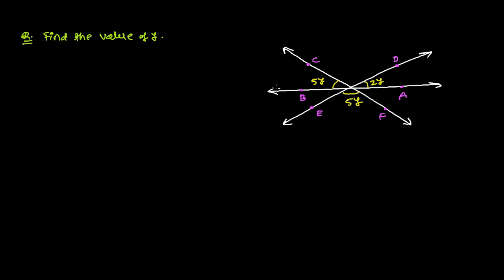The lines are here AB, ED, CF. These are the lines and by intersecting, these all are intersecting at a point. Let's say this is O and we have got few angles measurement. This is 5y, this is also 5y and this is 2y.